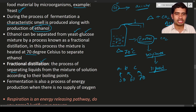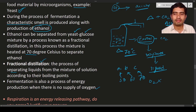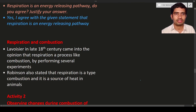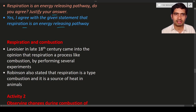Fermentation is also a process of energy production. In fermentation, the yeast does not require oxygen — no oxygen is required for the production of energy. The glucose is broken down in the absence of oxygen. This is also called anaerobic respiration; fermentation is an example of anaerobic respiration. Respiration is an energy-releasing pathway — that statement is correct.